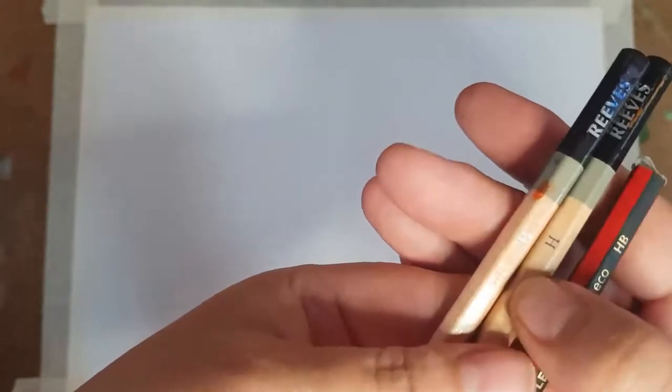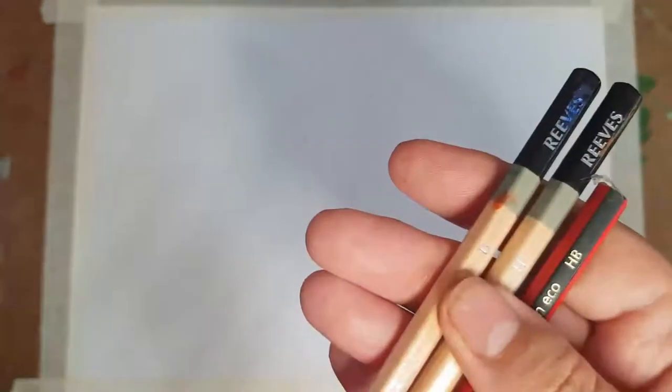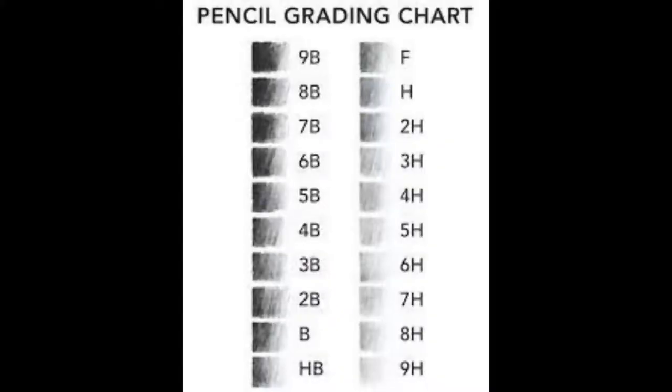Soft B pencils are darker. Hard H pencils are lighter. I've added a pencil grading chart so you can see. I would suggest testing each pencil out to get the feel for them. You might not want to use all.